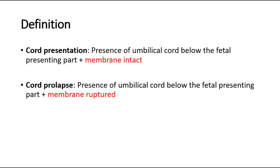Cord prolapse is a complication that occurs prior to or during the delivery of a baby. In cord prolapse, the umbilical cord will drop through the open cervix into the vagina before the baby, and it can then become trapped against the baby's body during delivery.